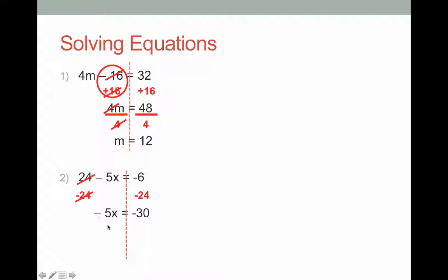Now I want to get rid of this negative 5. A lot of students will incorrectly believe that you would have to add 5 to both sides, but remember, this is minus 5 times x. To get rid of minus 5 times x, I need to divide by minus 5 on both sides of my equation. Dividing by minus 5 on the left-hand side cancels out the minus 5s, leaving just x. Dividing by minus 5 on the right-hand side gives positive 6. I can check this by substituting back into the original equation: 24 take away 5 lots of 6 is 30, and 24 take away 30 is minus 6, confirming that x equals 6 is correct.